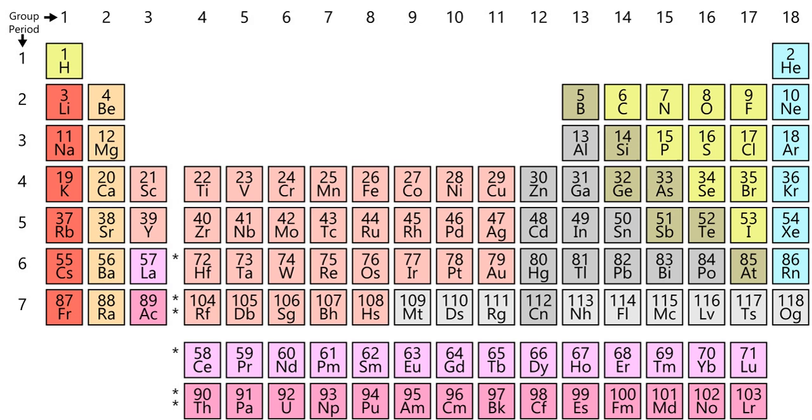Isotopes considered stable are those for which no radioactive decay has yet been observed. Elements with atomic numbers 83 through 94 are unstable to the point that radioactive decay of all isotopes can be detected.